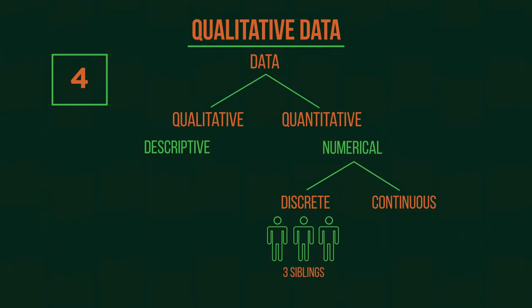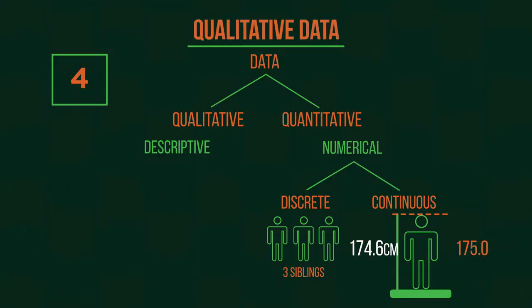Whereas, continuous data can take any value. It can be measured, like your height. You don't have to be either 174 cm or 175 cm. You can be somewhere in between.